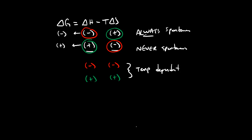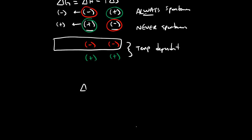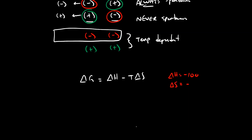Under some conditions the reaction can be spontaneous, but by changing the temperature we can change it from spontaneous to non-spontaneous. Let's explore the first situation: delta G equals delta H minus T delta S. We'll use delta H equal to negative 100 and delta S equal to negative 10. Plugging these in: negative 100 minus the temperature times negative 10. Let's figure out what delta G is at a low temperature — say 1 Kelvin.